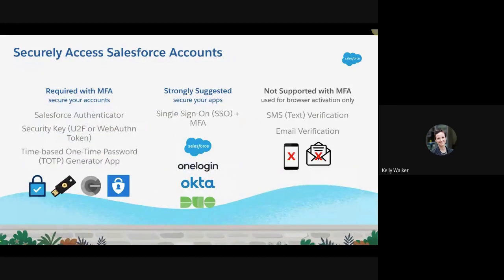When a user or admin sets up MFA, users will be able to use one of the approved second factors to secure their account. We have Salesforce Authenticator, a security key like a YubiKey or a WebAuthn token, or a TOTP generator app where users can get a one-time code. What we don't allow is SMS or email for MFA.